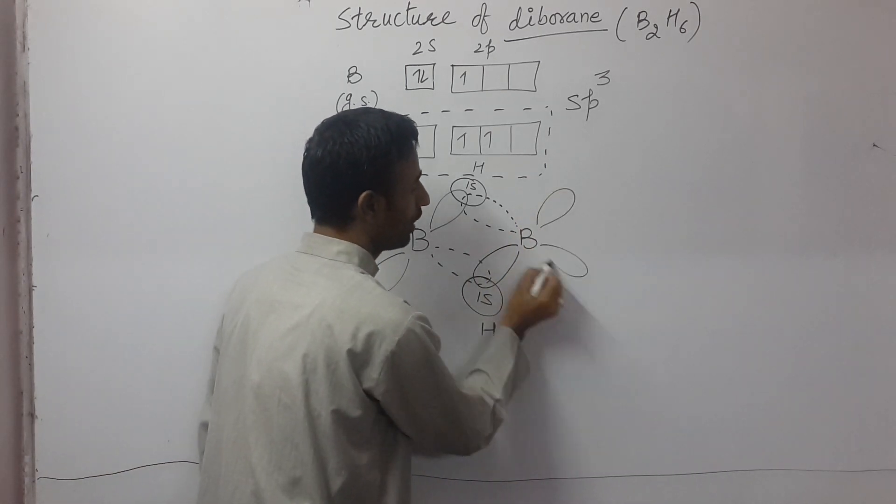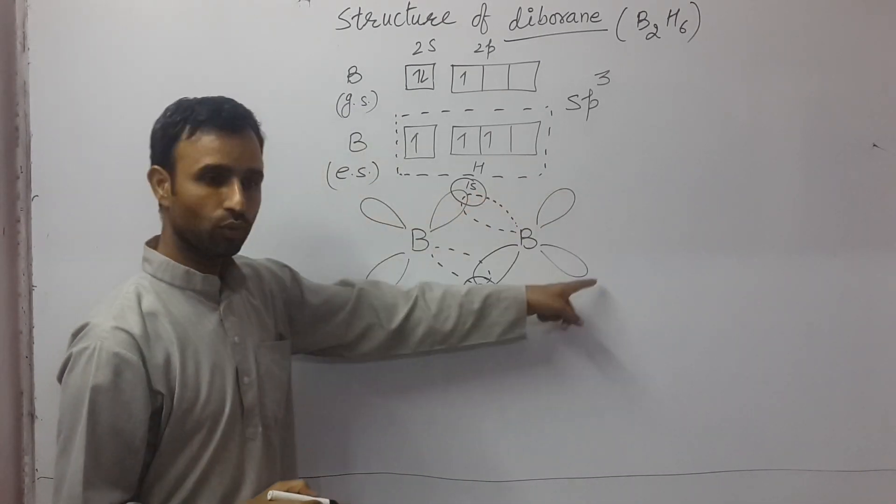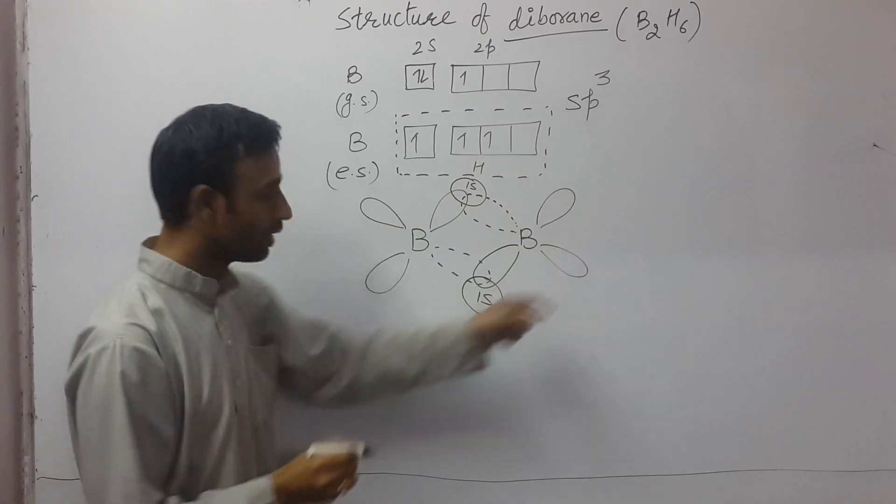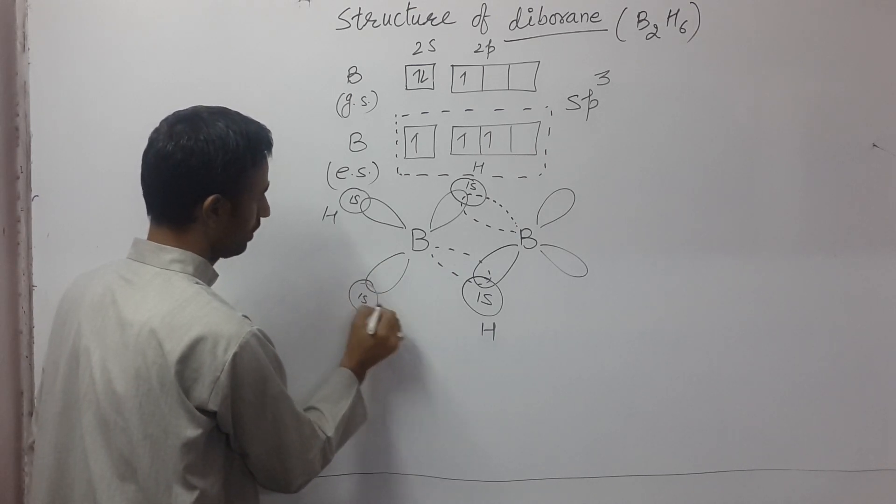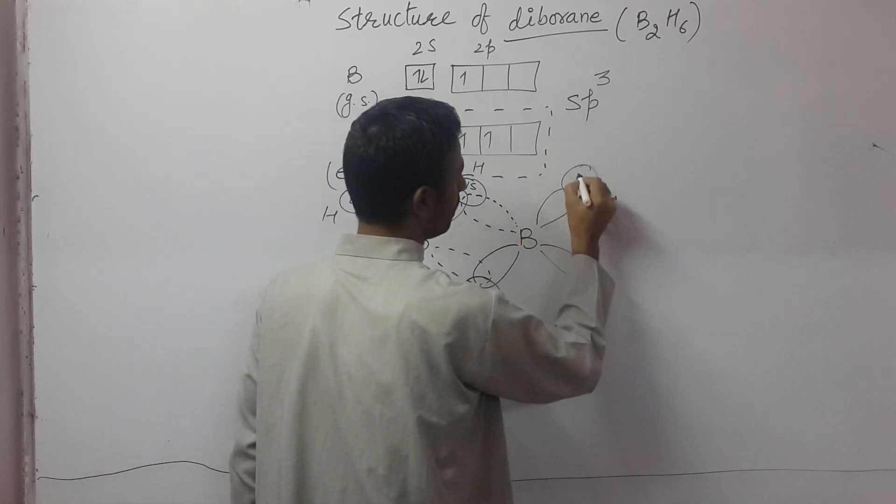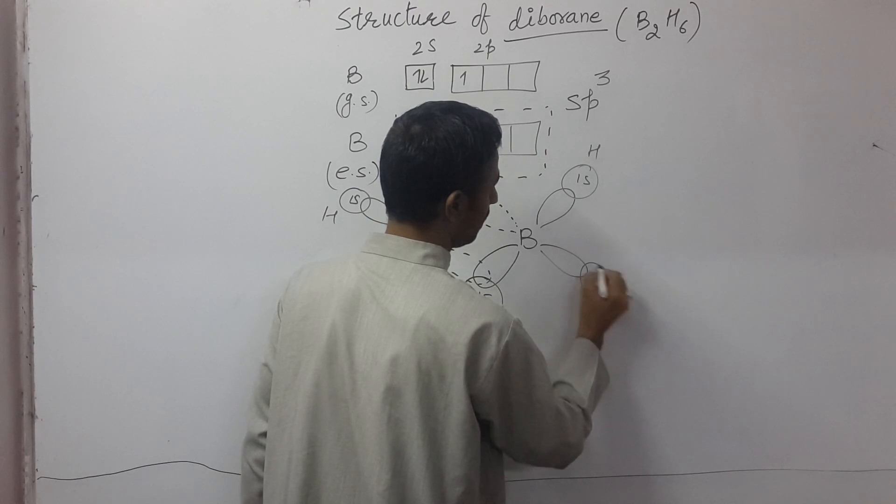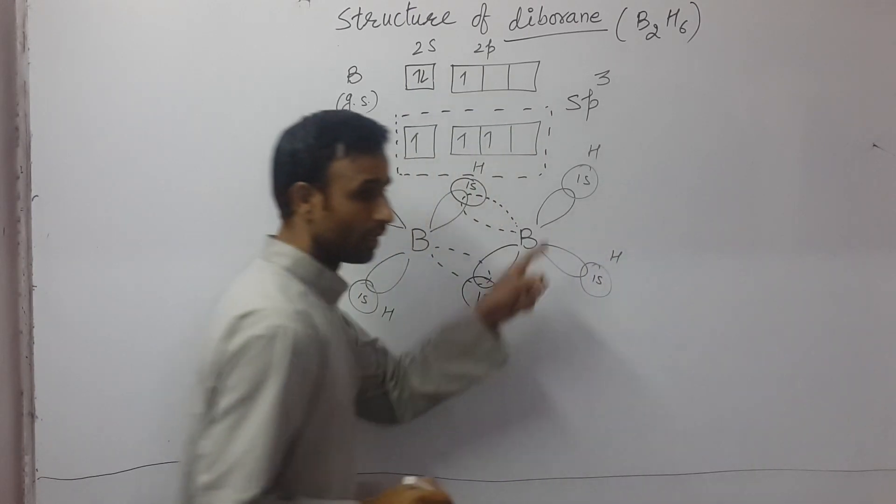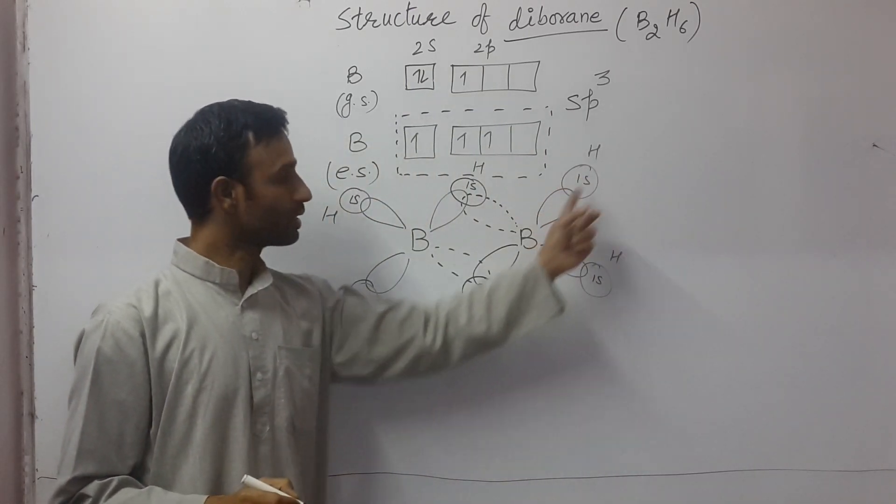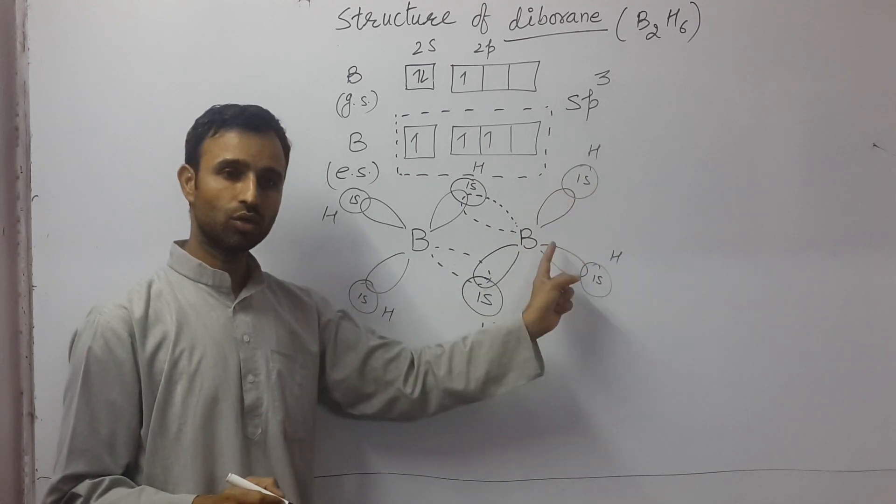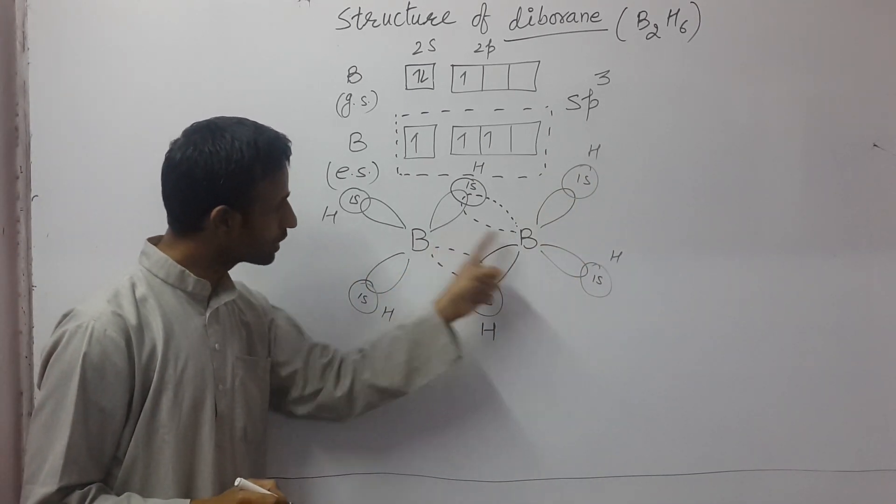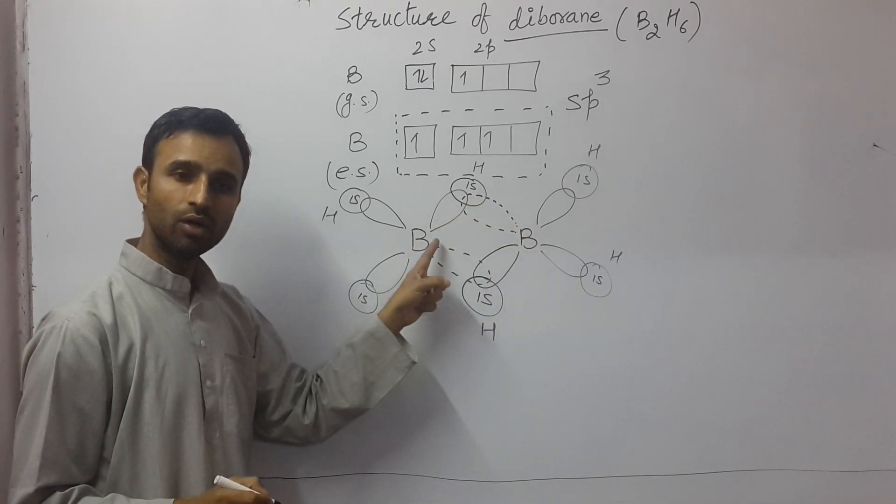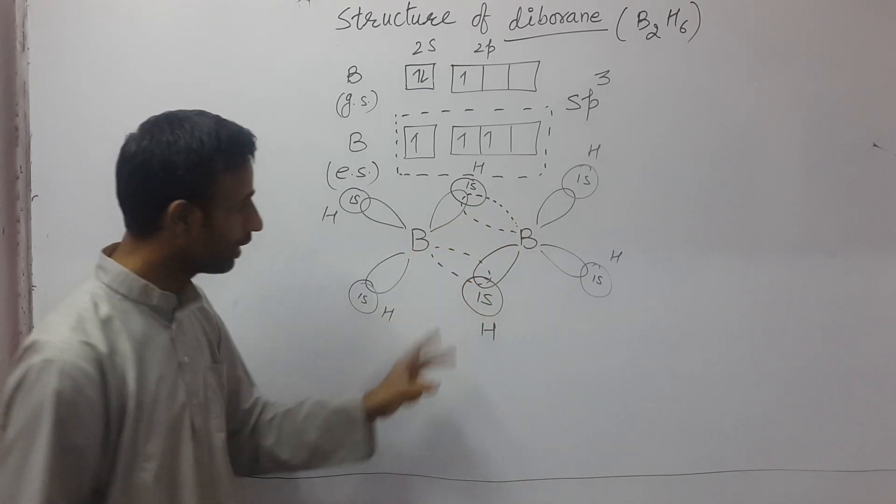Now, we are left with two orbitals and they overlap with one unit, with one hydrogen group. These terminal bonds are two-center, two-electron bonds. But these bonds are three-center, two-electron bonds.